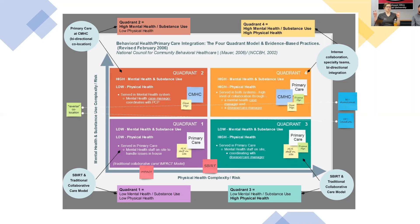If we go to high mental health needs but low physical health needs — quadrant two — this is what's sometimes called reverse co-location. I prefer the term bi-directional co-location, because there's no such thing as 'reverse.' What we need here is primary care that's able to come to the community mental health center — similar to Laura's practice — where we may have higher mental health and substance use needs and risk, but there are some physical needs that can be taken care of on site. Those patients are really looking at their community mental health center as their medical home.